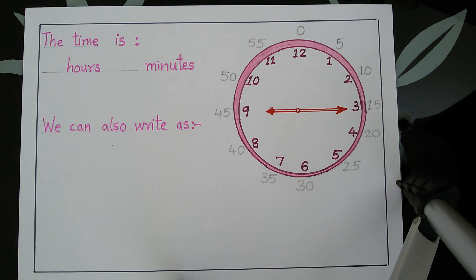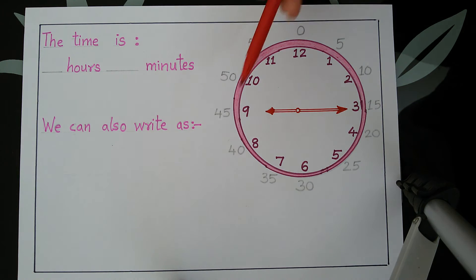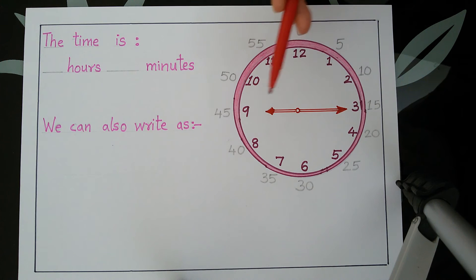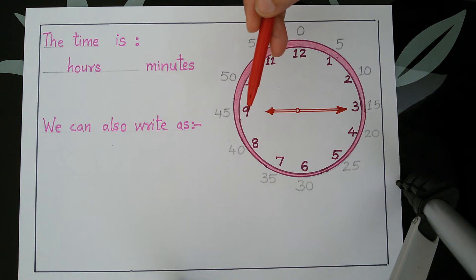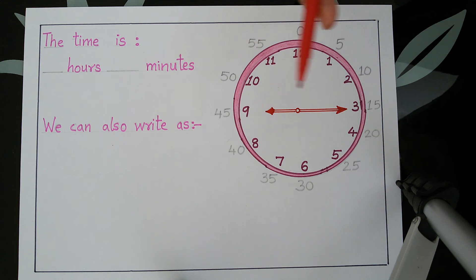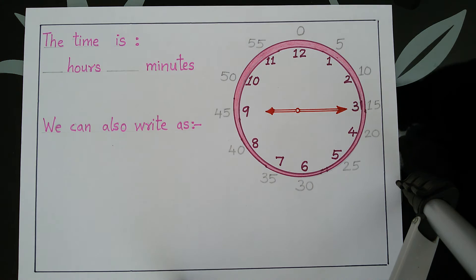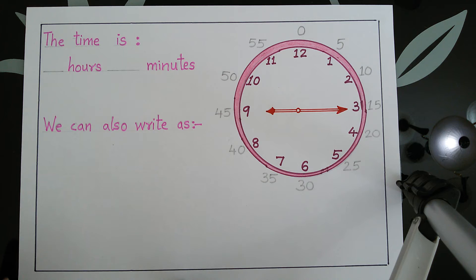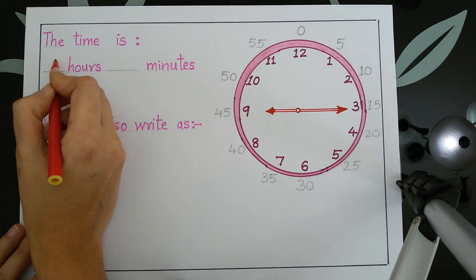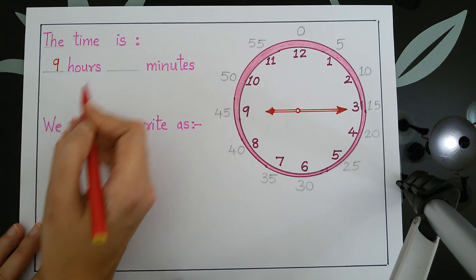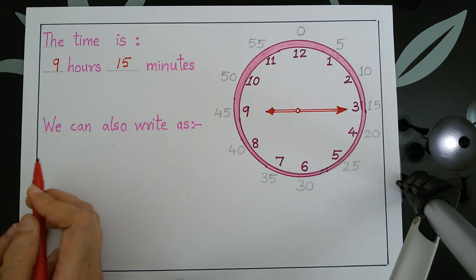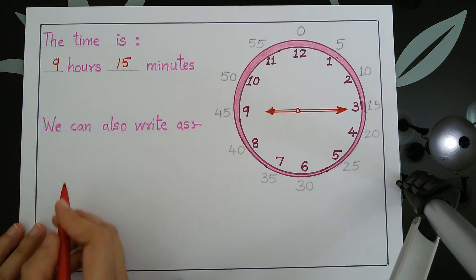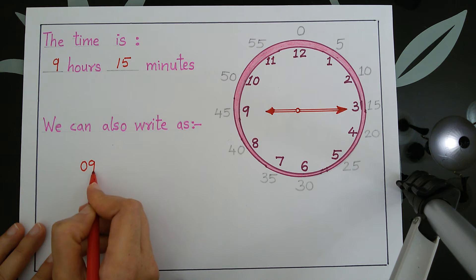In this picture we see the small hand is on 9 and the big hand is on 3. So what is the time? 9 hours 15 minutes. We will write it as 9 hours 15 minutes. We can also write this time as 9:15.